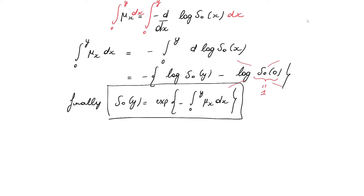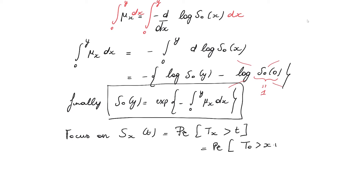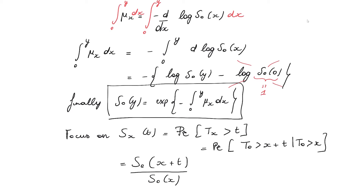This is for a zero-year-old, so how can we make it more general? We focus on the survival function of an X-year-old evaluated at T. We know that is the probability that TX is strictly larger than T, or written via the connection between T₀ and TX: T₀ larger than X plus T given T₀ is larger than X. We can rewrite this as the survival function of a zero-year-old evaluated at X plus T, divided by the survival function of a zero-year-old evaluated at X.